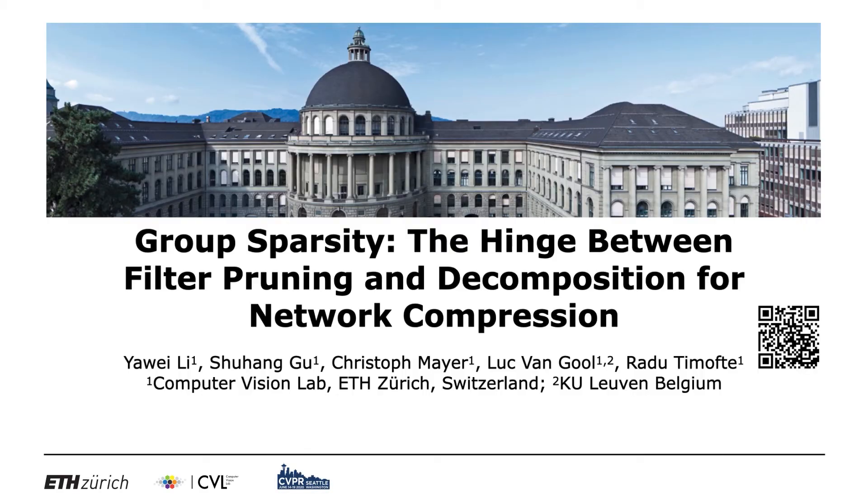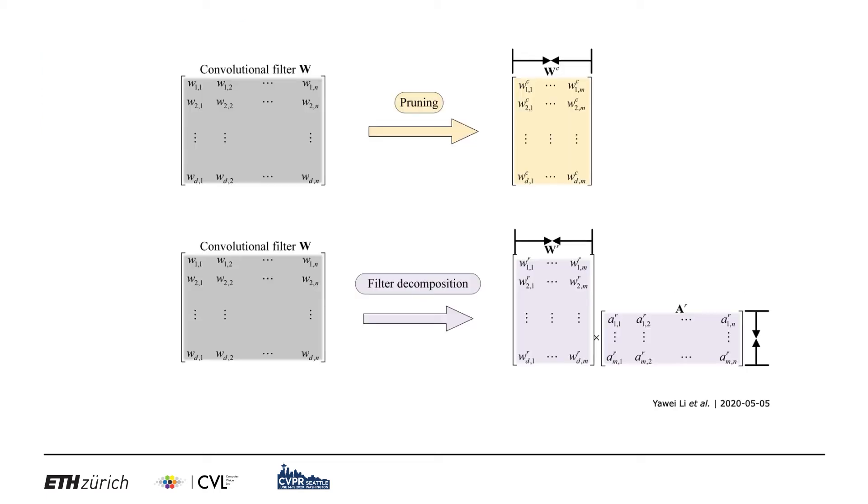Pruning and filter decomposition are among the most popular network compression methods. Thus, to unify the two, we propose group sparsity, the hinge between filter pruning and decomposition for network compression. Pruning compresses by nullifying columns of the weight matrix and reduces the number of output channels. On the other hand, filter decomposition approximates the weight matrix with two low rank matrices. Typically, different methods are required for each compression method.